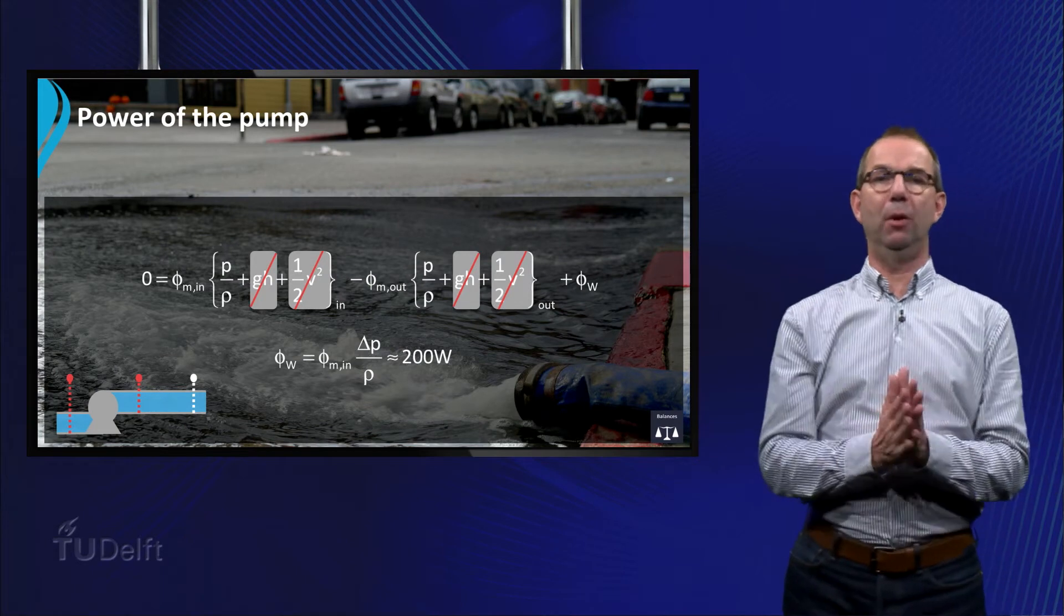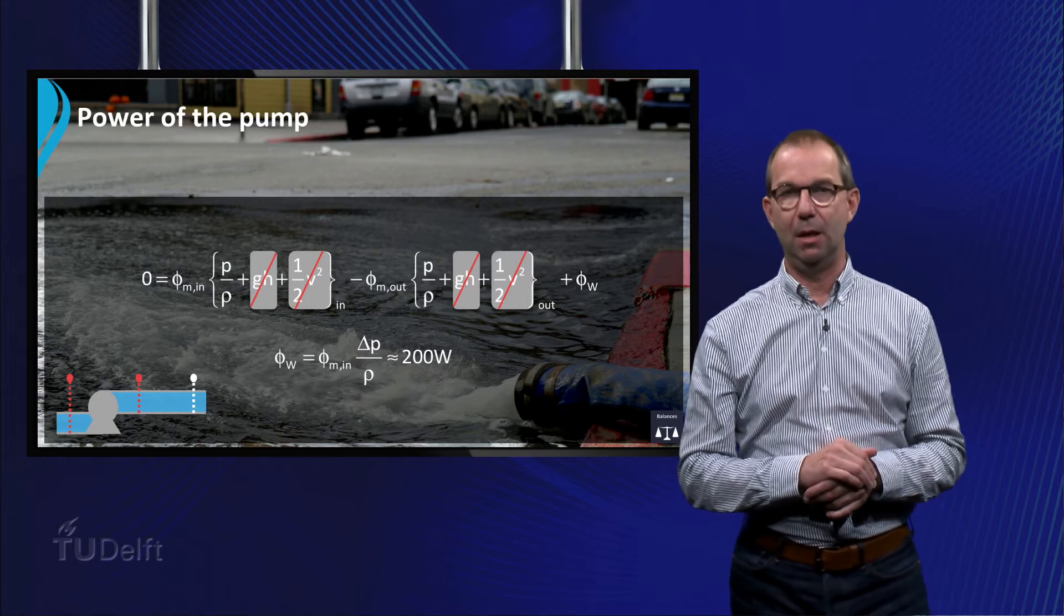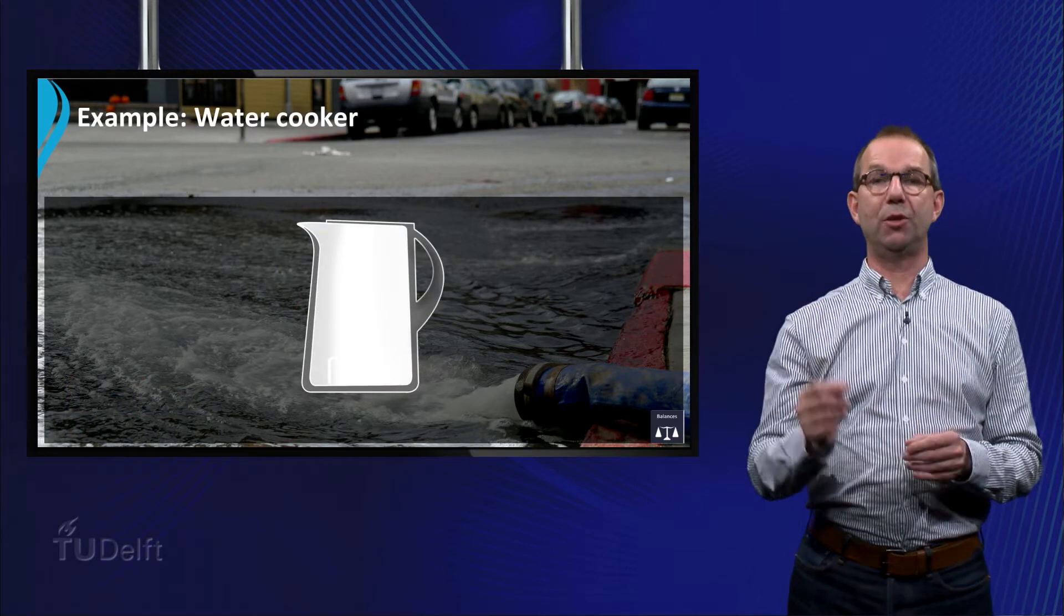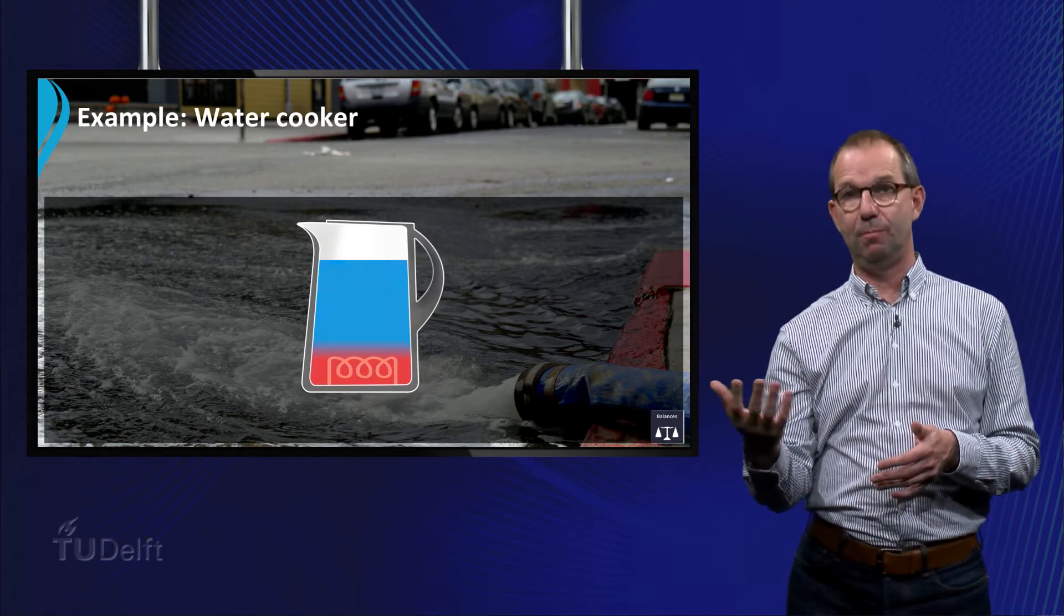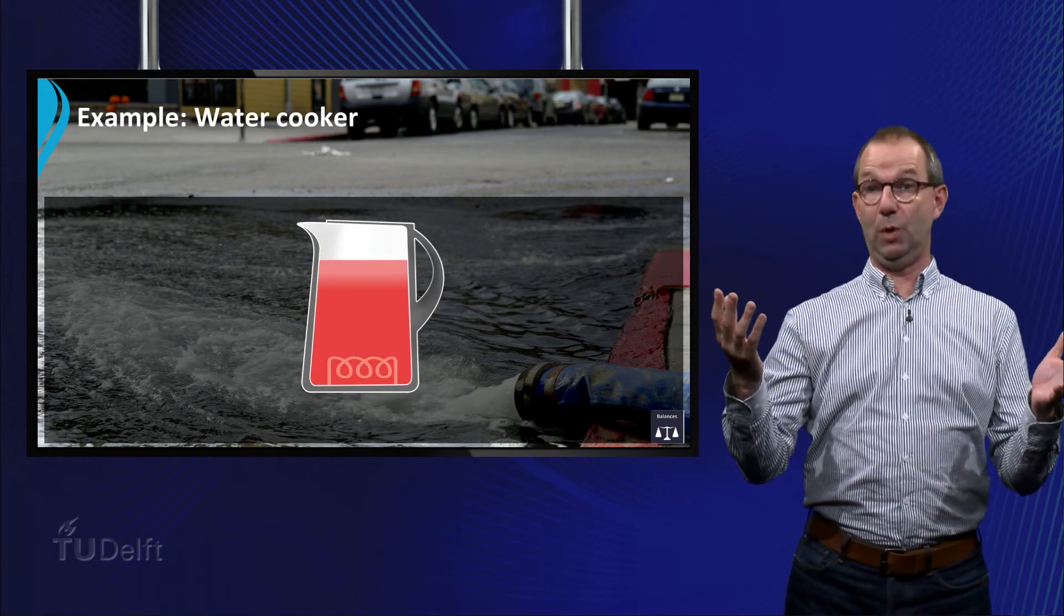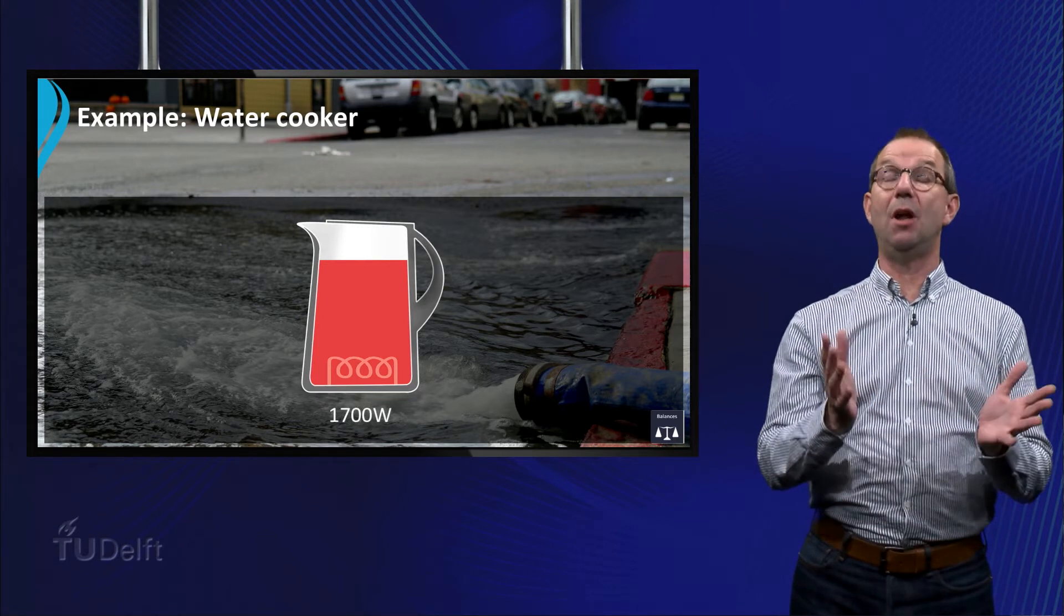Now we will give an example how we can use only the thermal balance. Look at the water cooker. One liter of water is heated from 25 degrees Celsius to 50 degrees Celsius. How long does it take to heat this water if we have a heating element of 1700 watts?